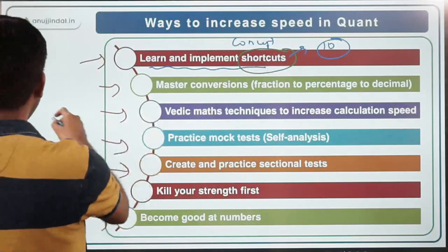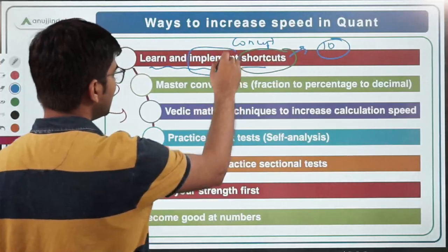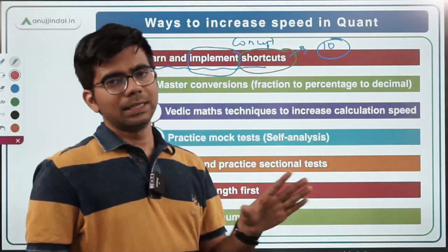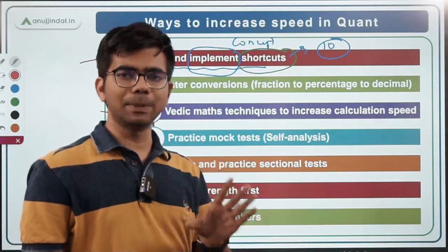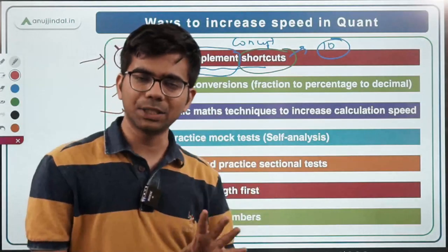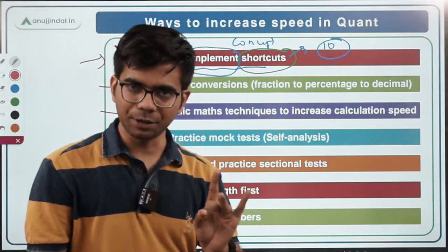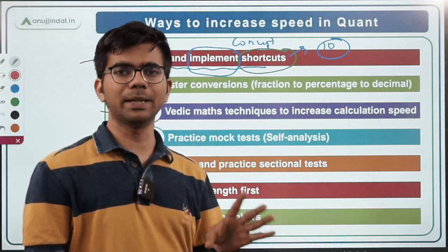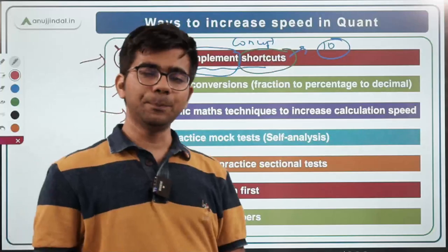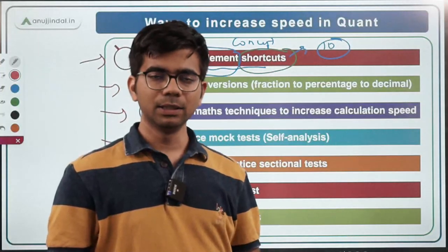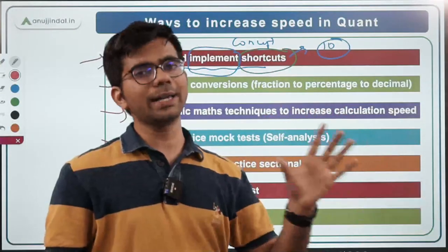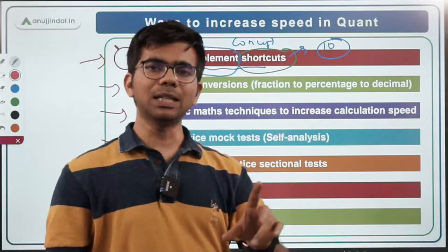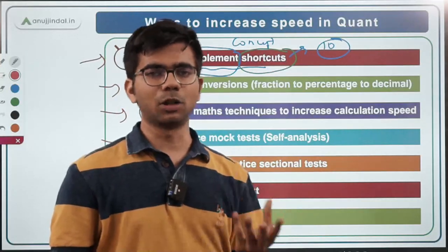Implementation of shortcuts is one thing which students find difficult. The best method to implement is: let's suppose you watch my time and work session and learn the shortcut taught there. When you are self-practicing from any book or source, try to apply that shortcut to that particular question. It will help you analyze how to apply the shortcut taught in class to a particular question. Some topics have only a single shortcut, but in some topics there are multiple shortcuts as well.